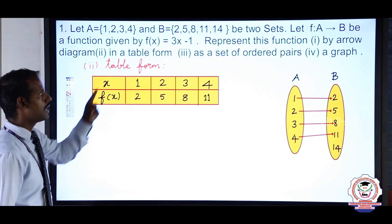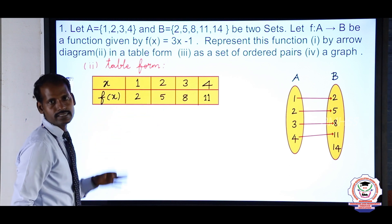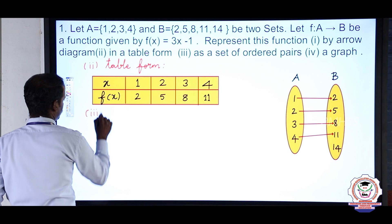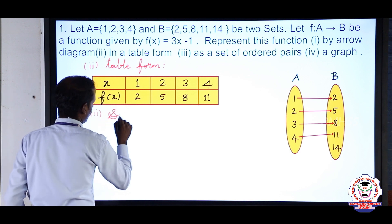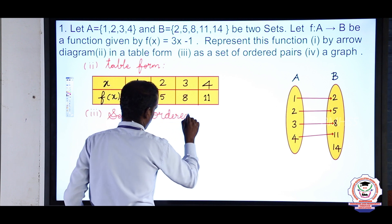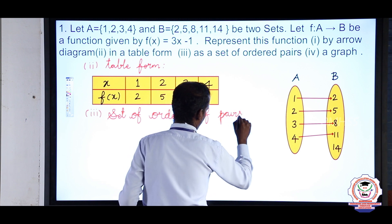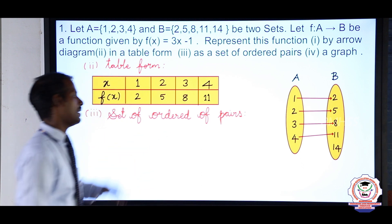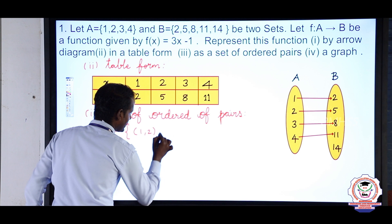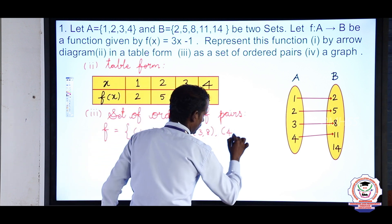The third representation is the set of ordered pairs. 1 relates to 2, so (1, 2) is the first ordered pair. (2, 5) is the second ordered pair. (3, 8) is the third ordered pair. (4, 11) is the fourth ordered pair. So the function as a set of ordered pairs is {(1,2), (2,5), (3,8), (4,11)}.